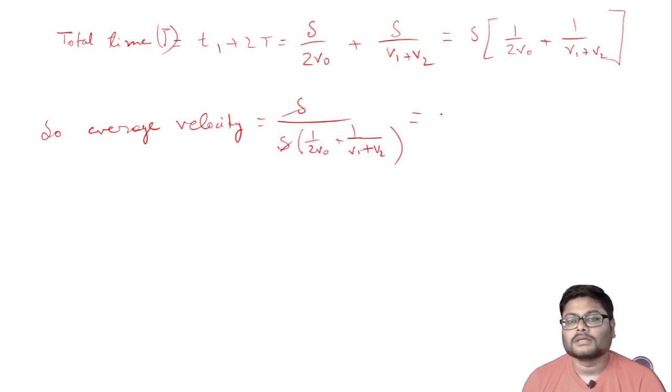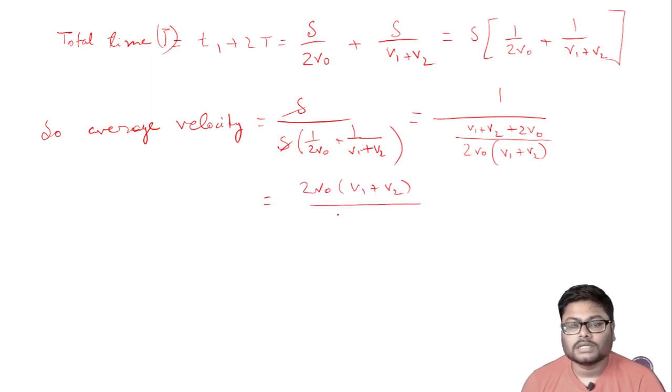What we get is 2v0(v1 + v2) divided by (v1 + v2 + 2v0). This is the average speed.